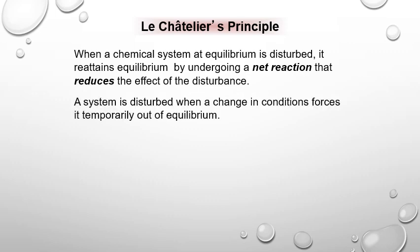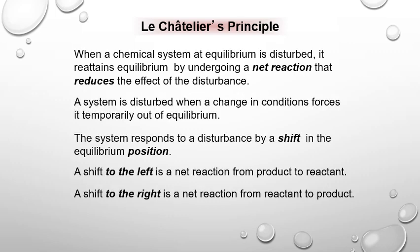We now shift to Le Chatelier's principle. When a chemical system at equilibrium is disturbed, the reaction always moves to reestablish equilibrium by undergoing a net reaction in one direction that reduces the effect of the stress. A shift to the left means net reaction from products to reactants; a shift to the right means net reaction from reactants to products.